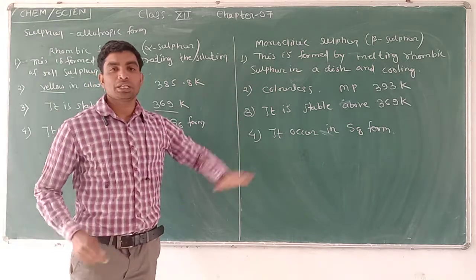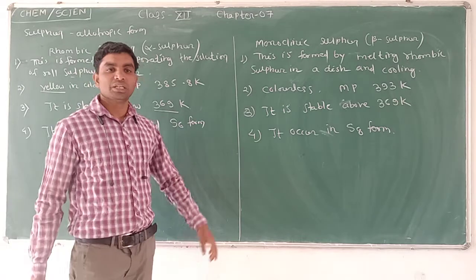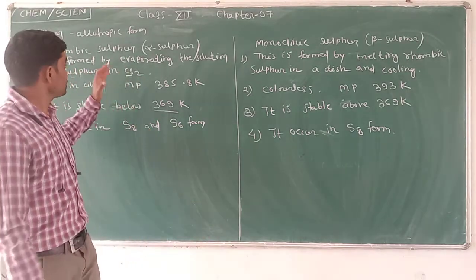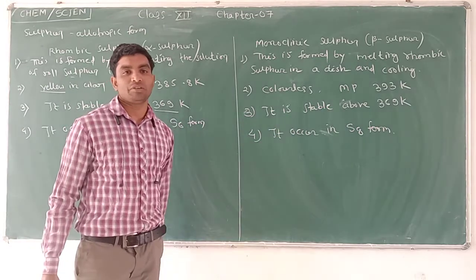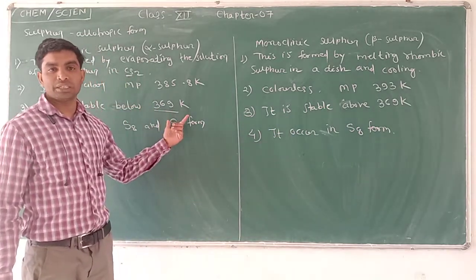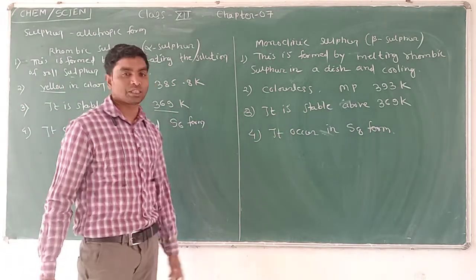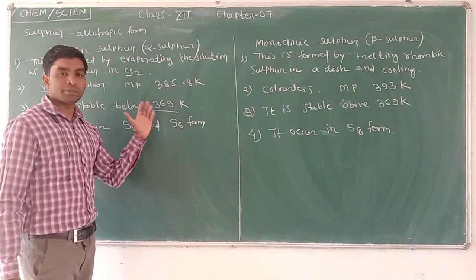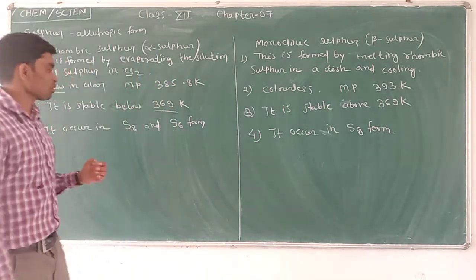Below 369 Kelvin it is stable, and above this temperature rhombic sulphur transforms into monoclinic sulphur.